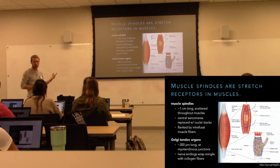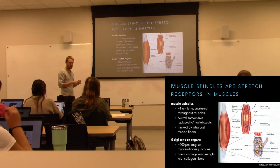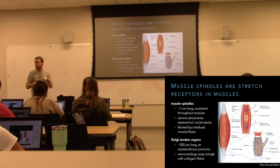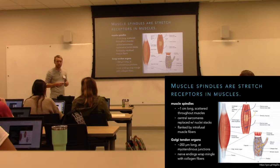To sense muscle length, we wrap a sensory afferent around a specialized structure called a muscle spindle — not around the contracting muscle fibers that generate force. Muscle spindles are very small, scattered throughout the muscles to sense how much stretch is there and what the muscle length is. They also have muscle fibers flanking them so we can control what the muscle spindle thinks the muscle length is — very important for carrying out movements.